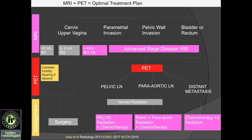This is how we plan treatment. We perform an MRI; if the patient has low grade disease and is not a candidate for fertility sparing surgery, the patient undergoes surgery and that's curative. For patients with higher stage disease, they need to undergo PET-CT scan. If there is pelvic lymph node involvement, patients must go for pelvic radiation and chemotherapy. If there is distant metastasis, they go for chemotherapy and radiation. In para-aortic lymph node involvement, they undergo pelvic and para-aortic radiation and chemotherapy.